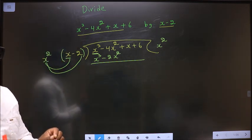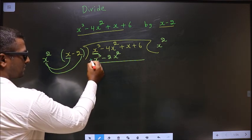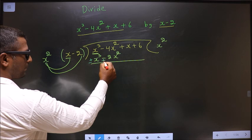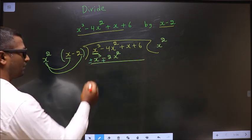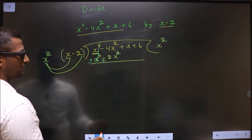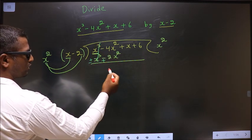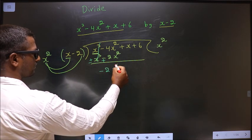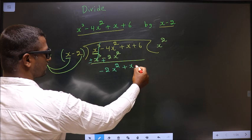You should change the signs. Here it is plus, make it minus. Here it is minus, make it plus. It is a rule. Now, plus x cube minus x cube will get cancelled. Here minus 4x square plus 2x square will result in minus 2x square. And this, as it is, no change.